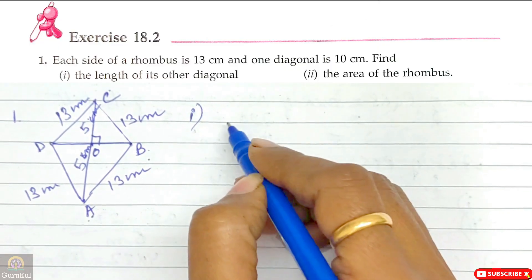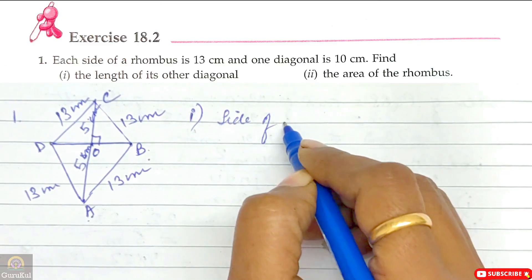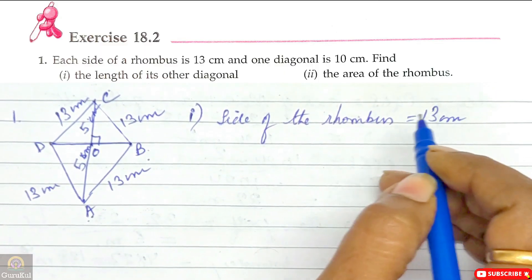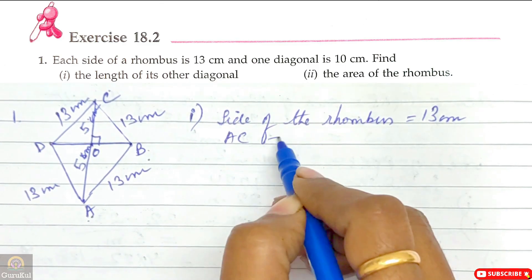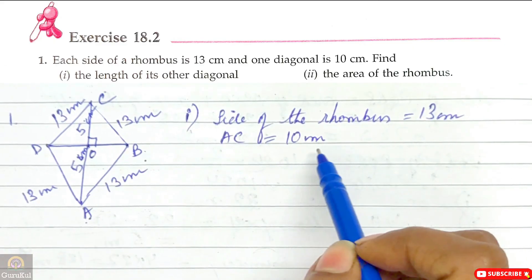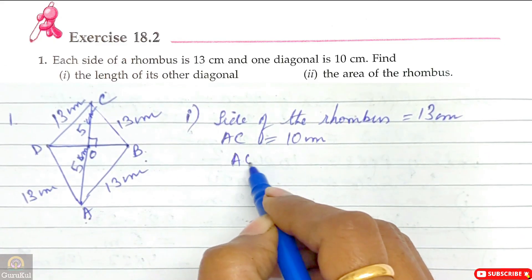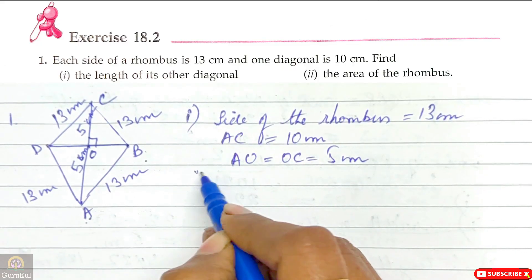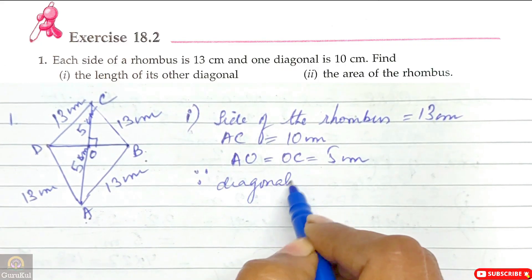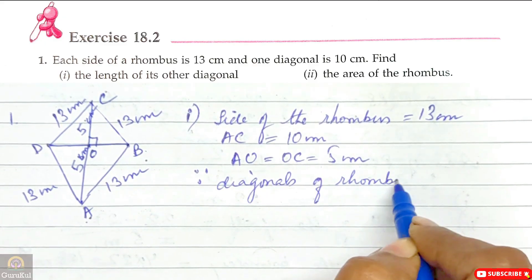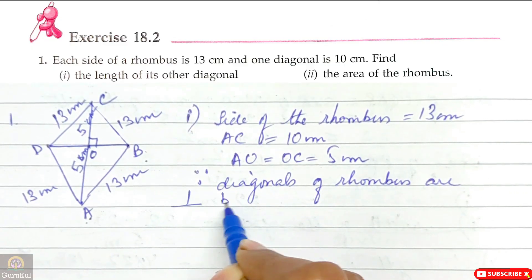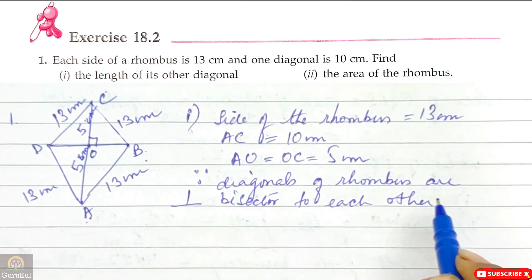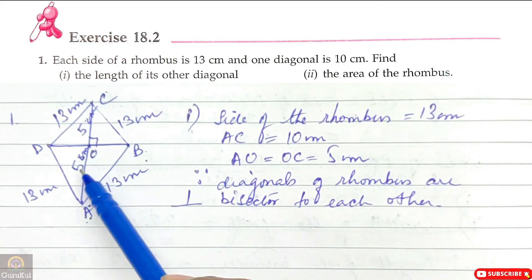So let's begin. Side of the rhombus is equal to 13 cm. A, C is equal to 10 cm. So A, O is equal to O, C which is 5 cm each. The reason is that the diagonals of a rhombus are perpendicular bisectors to each other.